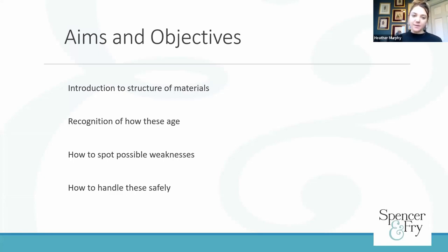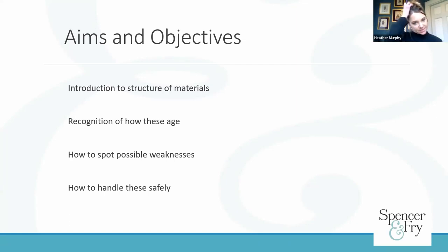So to begin with, the aims and objectives of this session. We hope to familiarise you with the primary concerns involved with the care and safe handling of paper and parchment. This covers a basic overview of the structure of these materials and helps understand how they behave, recognise signs and characteristics of ageing, how to spot possible weaknesses that result from ageing, and how to handle them safely. At the end I'll give you some resources to take away and we'll have some time for questions. We'll do a section on paper first, then a short break, then a section on parchment.